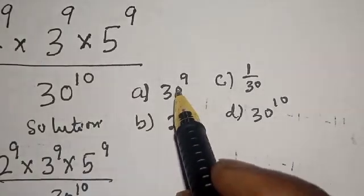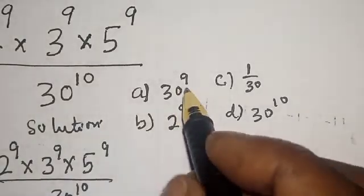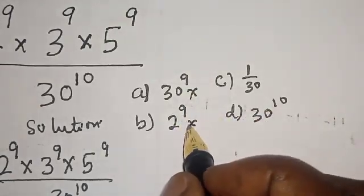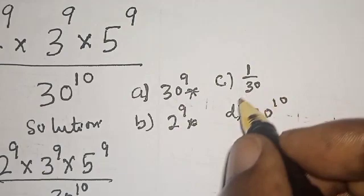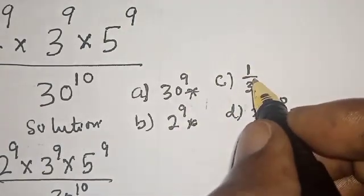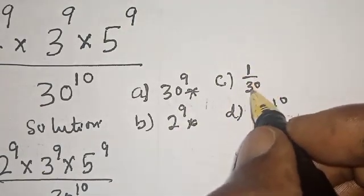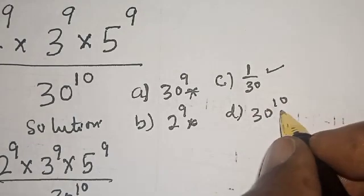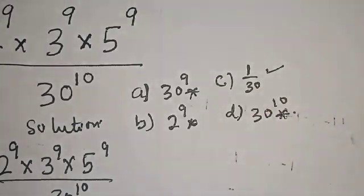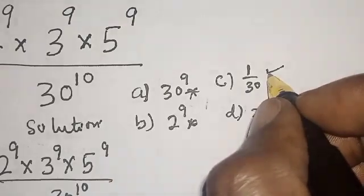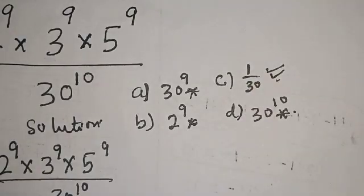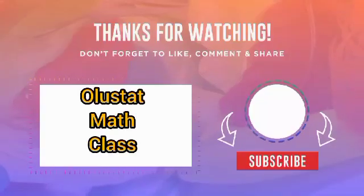Let's check the options: A is 30 raised to power 9 — no. B is 2 raised to power 9 — no. C is 1 over 30 — this is correct. And D is 30 raised to power 10 — no. So our correct answer is 1 over 30. If you enjoyed the class, please like, share, comment and subscribe. Thank you.